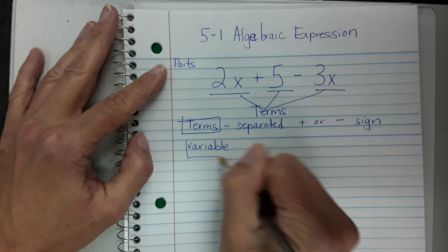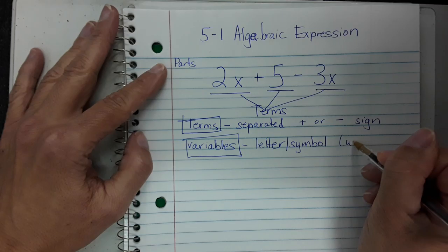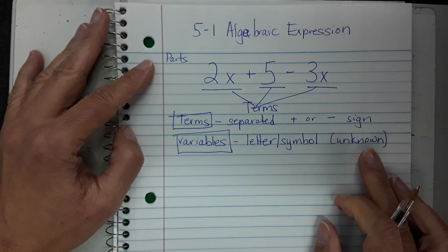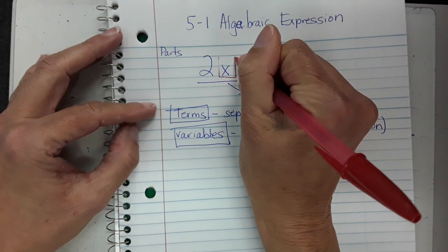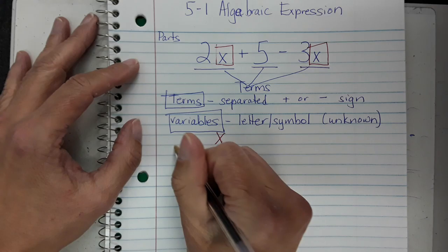We're also going to have variables in our algebraic expression. The variables are your unknown — it's the letter usually, or it could also be a symbol that represents our unknown. When we're evaluating our expressions, we're going to tell you what the unknown is, and you plug it in or substitute the values. So in our example, the variable would be x.